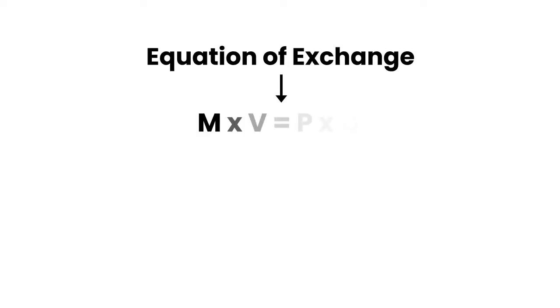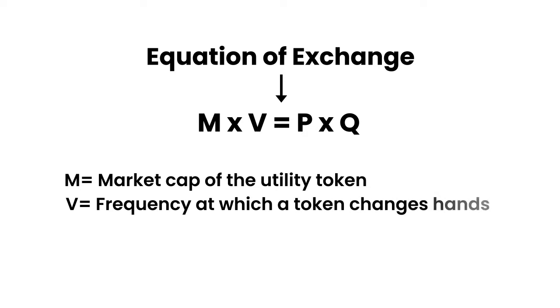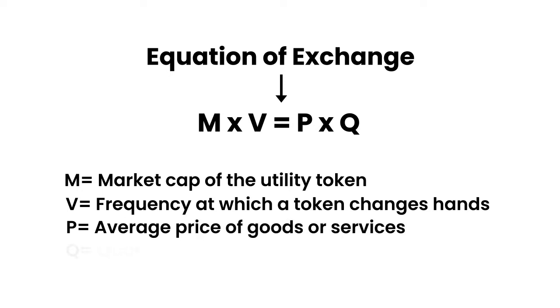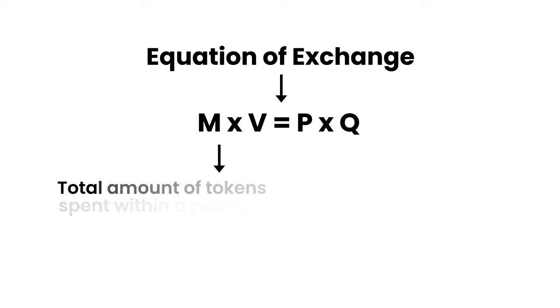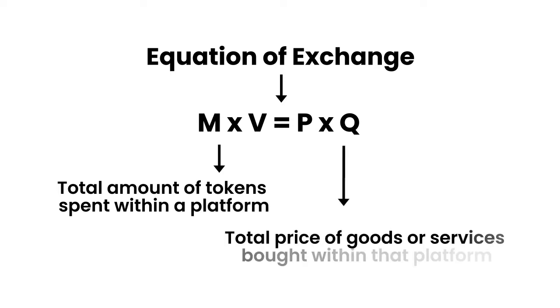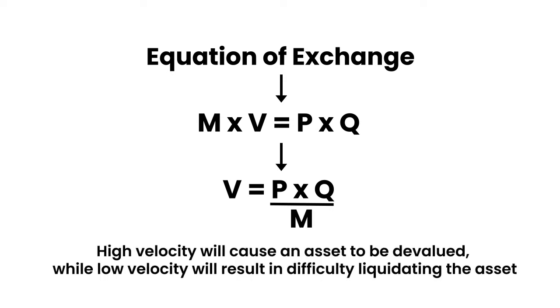To better understand the impact of velocity on utility tokens, it helps to look at the entire equation of exchange, which we'll modify a little bit to make it more relevant to our industry. This equation can be expressed as M times V equals P times Q, where M is the market cap of the utility token, V is the frequency at which the token changes hands — also known as velocity — P is the average price of goods or services, and Q is the quantity of goods and services, all within a certain time period. The left side represents the total amount of tokens spent within a platform, while the right side represents the total price of goods or services bought within a platform. You can rearrange the equation such that V equals P times Q over M, and see that high velocity will cause an asset to be devalued, while low velocity will result in difficulty liquidating the asset.